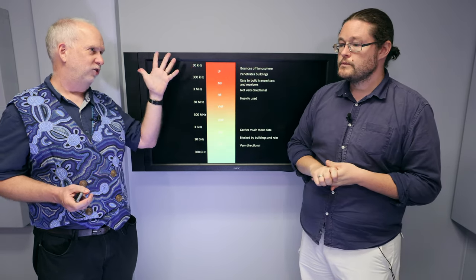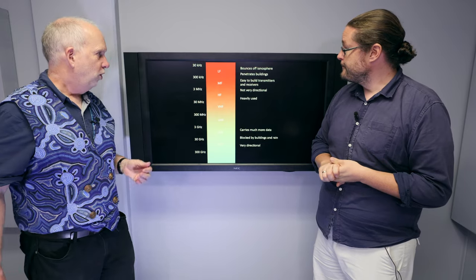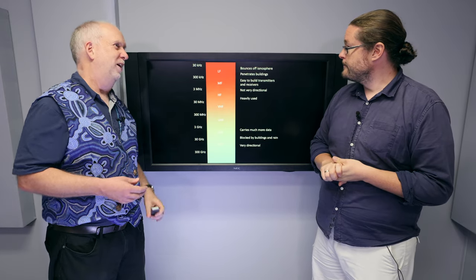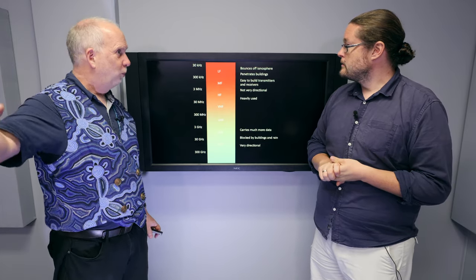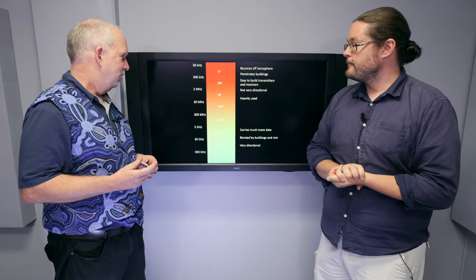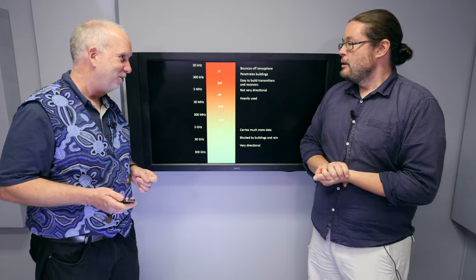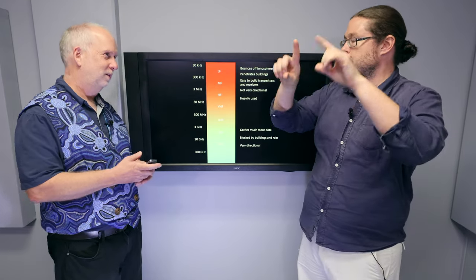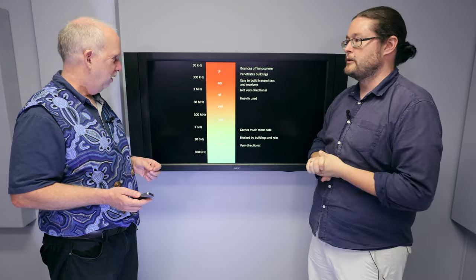And there are pluses and minuses of both the low and the high frequencies. So the low frequency bounces off the ionosphere, which means you can send signals around the world. So that's the sort of thing for shortwave radio. Shortwave is actually medium frequency. But that's because we have so few waves, we can't carry as much information and therefore we can't transmit as much.